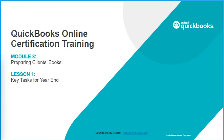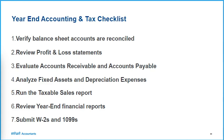Key tasks for year-end. Here's a checklist to consider on the tax side of the house: verify your balance sheet accounts and make sure those things are reconciled, review your P&L, evaluate AR and AP, analyze your fixed assets and depreciation expenses, run those taxable sales reports, review the year-end financial reports, and then submit your W-2s and 1099s. This is an excellent way to standardize the work you're already doing.